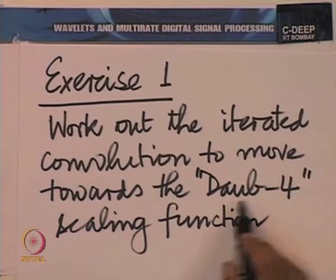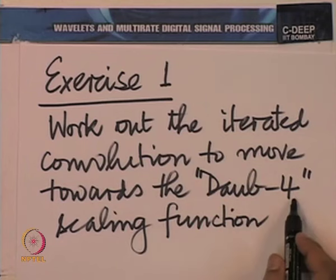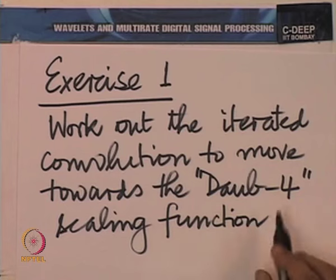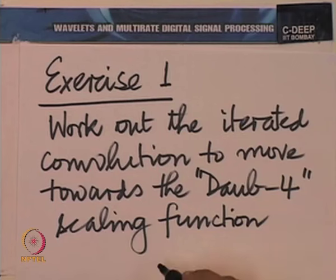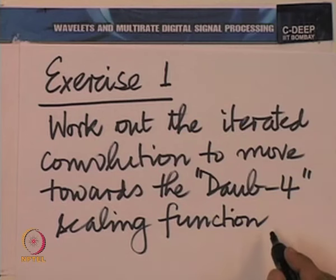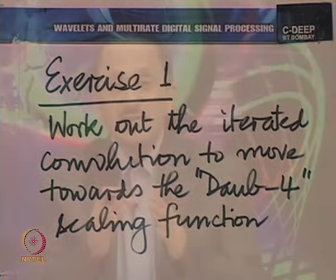A nomenclature: Daub4 means the Daubechies filter bank with filters of length 4. What we have just been talking about is the Daub4 set of filters or Daub4 filter bank. We have explained how to carry out the iterated convolution; it would be worth actually carrying it out to arrive at the Daub4 scaling function. One would notice that the function that emerges is a continuous function, but it would not be expressible in closed form — not as sin(t) or e^t or something of that kind, but it converges to a continuous function.